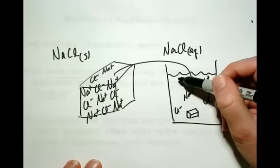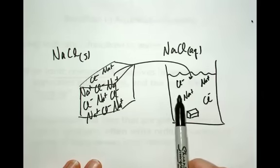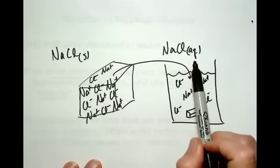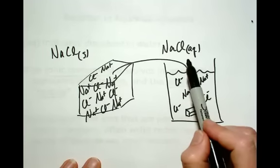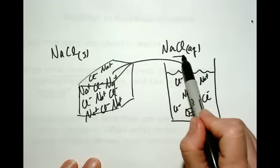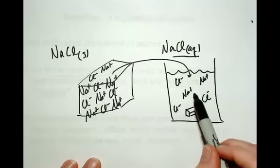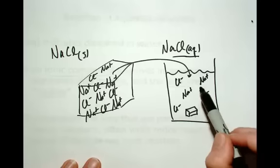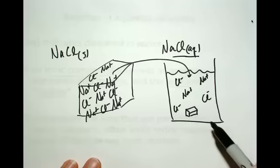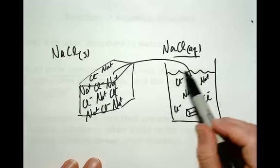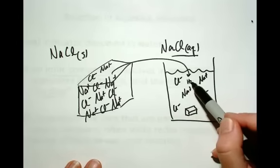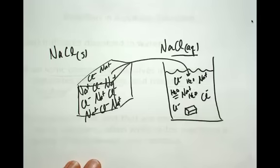For now, I need you to know what chemists think when they see an ionic compound with (aq) next to it. They know it's dissolved in water and not existing as pairs of sodium and chloride ions, but that the ions are free, mobile, moving around surrounded by water everywhere in solution. That's a really important concept.